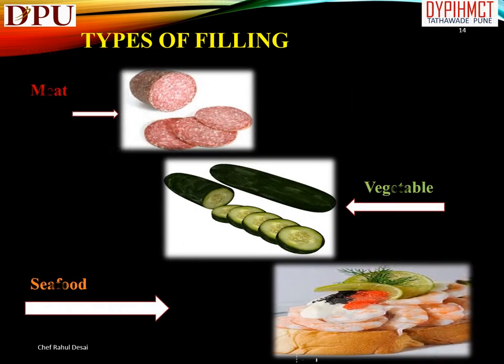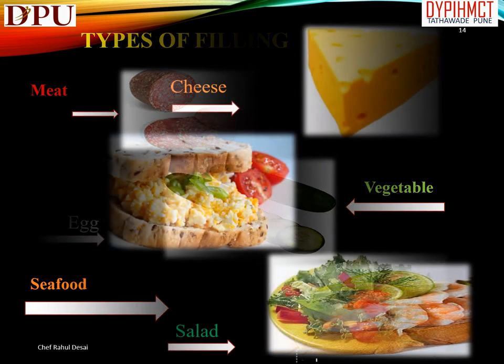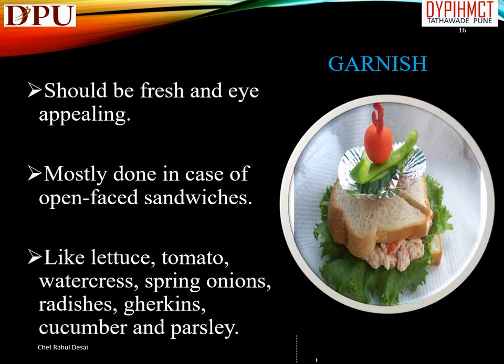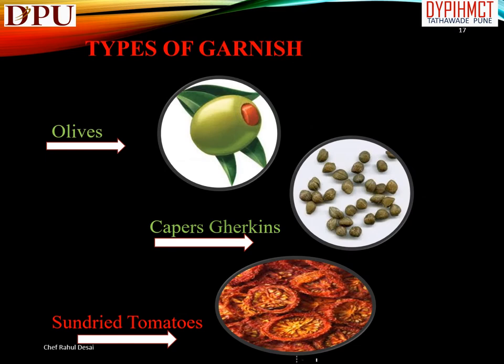Types of filling include meat, vegetable, seafood, cheese, egg, and salad. Garnish should be fresh and eye-appealing, mostly done in the case of open-faced sandwiches — like lettuce, tomato, watercress, spring onions, radishes, gherkins, cucumber, and parsley. Types of garnish include olives, capers, gherkins, and sun-dried tomatoes.